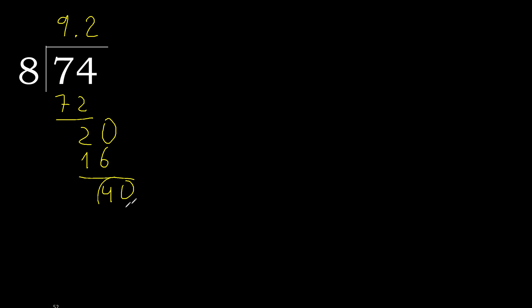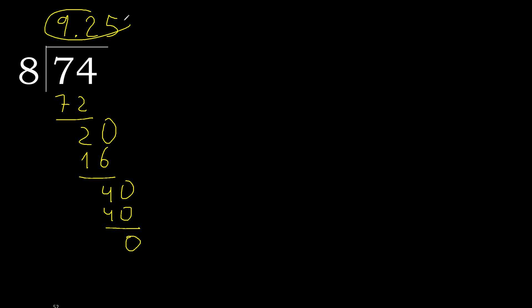Point 40. 8 multiplied by 5 is 40, which is not greater. Subtract — 0. 0, therefore finish it. 74 divided by 8 is here, ok.